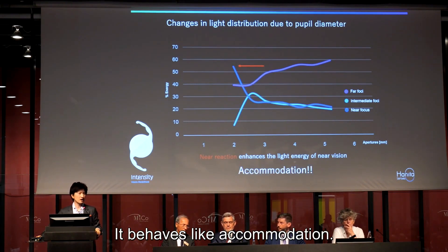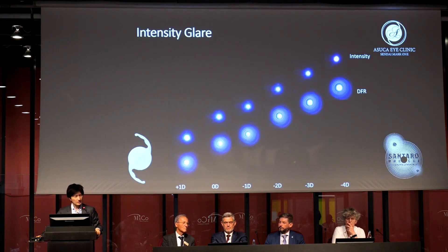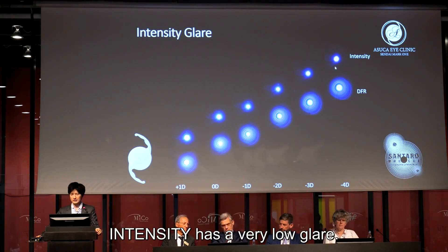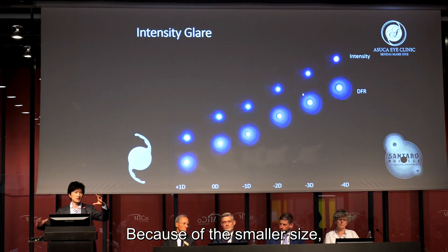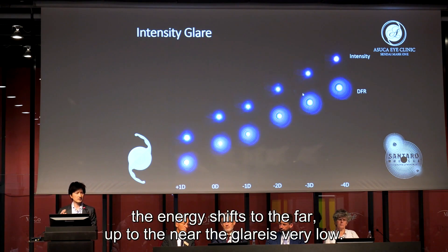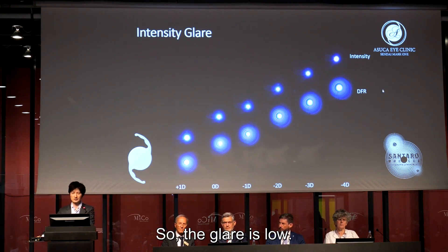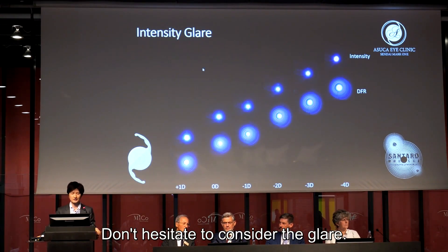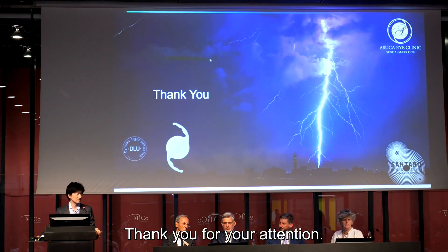This is the additional slide with glare, modeled with glare. Intensity has very low glare, because of the smaller aperture size — the energy shift means that near energy is very low, so the glare is very low. Compared to another higher-add lens, don't hesitate regarding the glare with Intensity. Thank you for your attention.